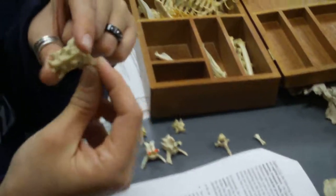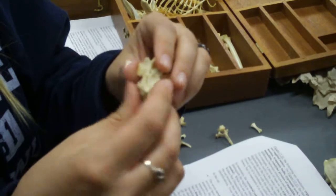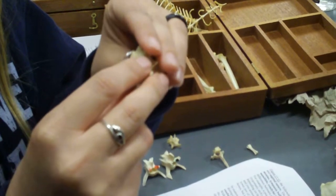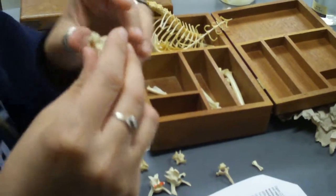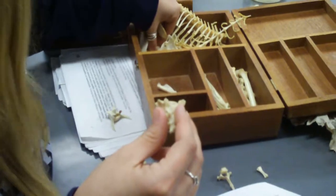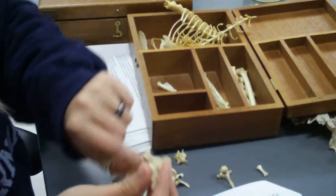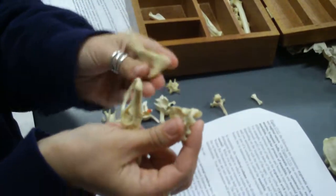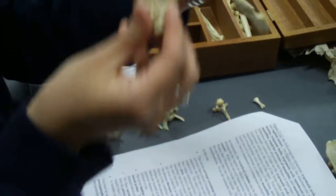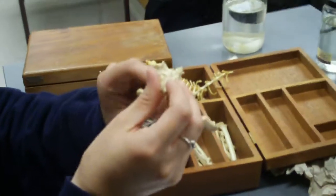This one, also fairly easy to identify because it's a fusion of three vertebrae. This is the sacral vertebrae. So this sits right between the pelvic girdle. These are the same side of the pelvis, but if they weren't, it would sit right here.